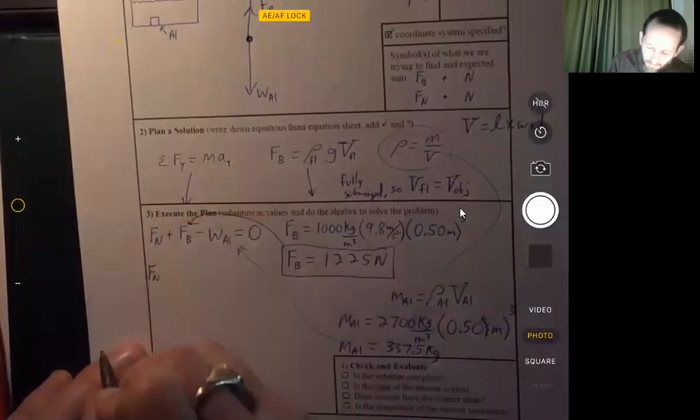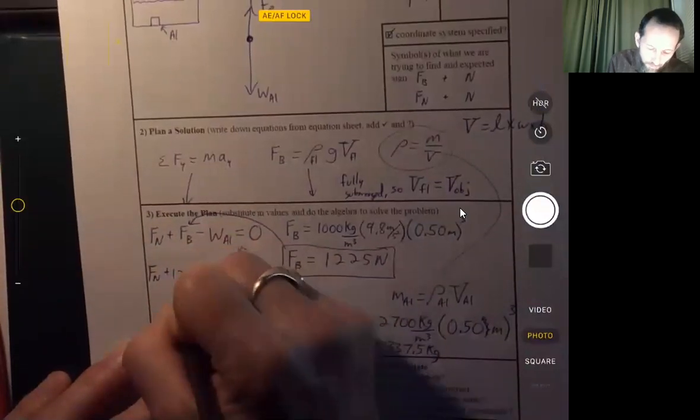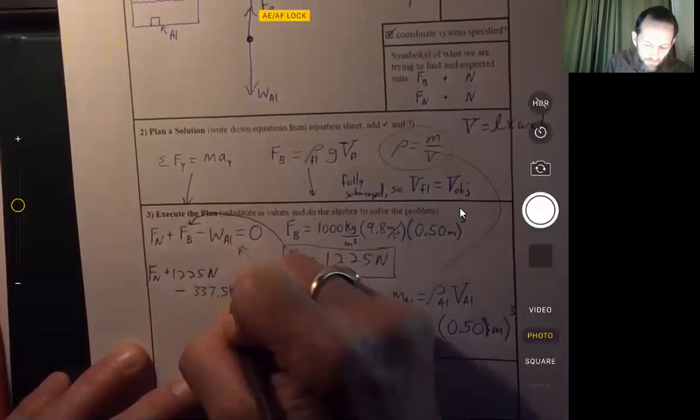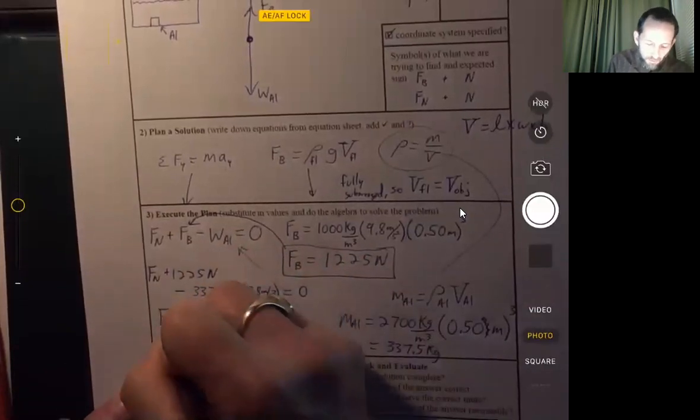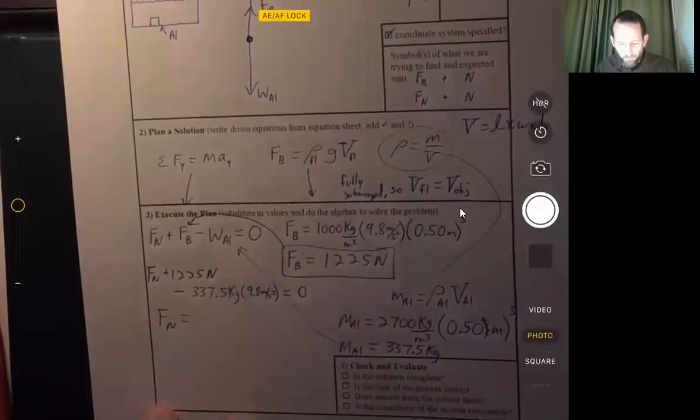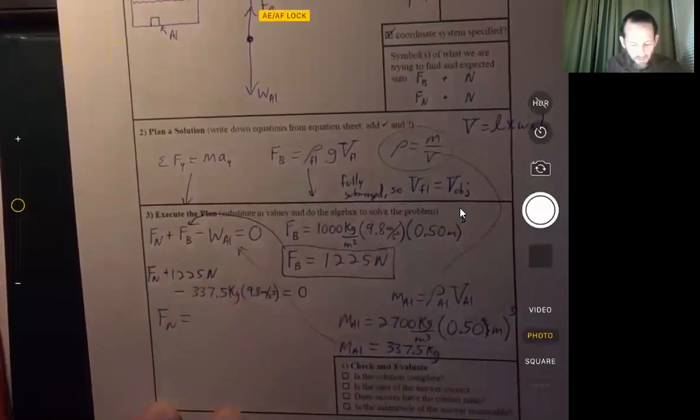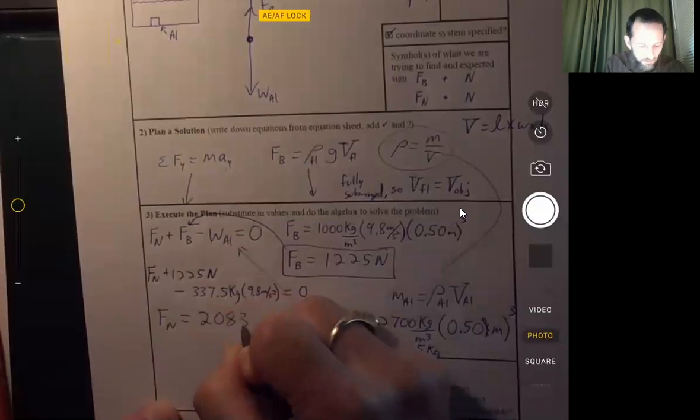So the normal force plus 1,225 newtons minus 337.5 kilograms times 9.8 equals zero. And so our normal force comes out here. Let's see. 1225 minus 337.5 times 9.8, so we get negative 2,082. That's on the left side. So we're going to add it to both sides. So we get 2,083 newtons.